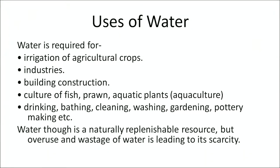The 20% of available fresh water on land is used for various purposes. Water is required for irrigation of agricultural crops, industries, building construction, culture of fish, prawn, aquatic plants — that is aquaculture — drinking, bathing, cleaning, washing, gardening, pottery-making, etc. Water, though a naturally replenishable resource, is being overused and wasted, leading to its scarcity.